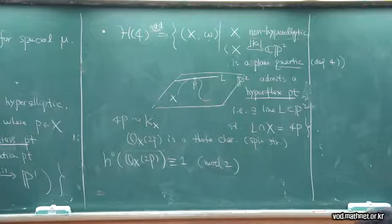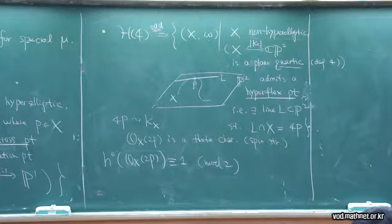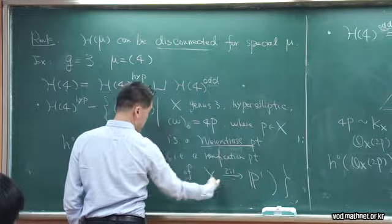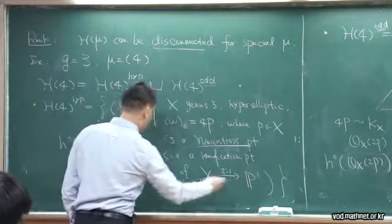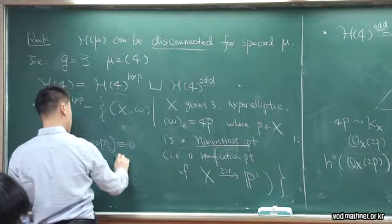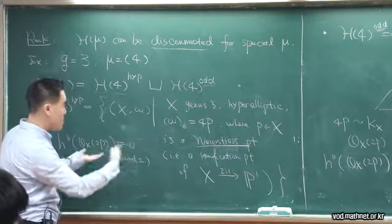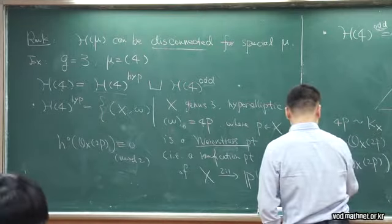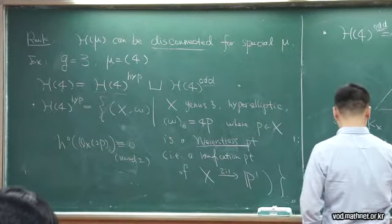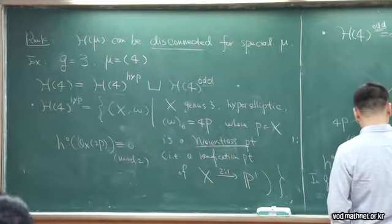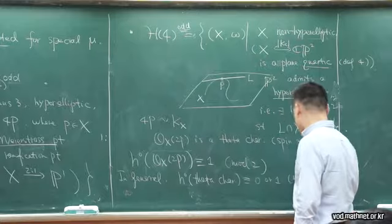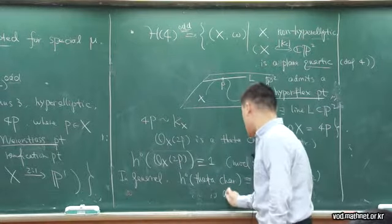For the hyperelliptic component, H⁰(X, 2P) — because P is chosen to be one of the ramification points, this bundle and its section actually induces the double cover. So this turns out to be 2, or congruent to 0 mod 2. That's another way to see they are disjoint: the parity is congruent to 1 or 0. In general, H⁰ of a theta characteristic mod 2 is a deformation invariant in a family. That is, in a flat family of smooth curves carrying a family of theta characteristics, H⁰ mod 2 is either all 0 or all 1 throughout the family.